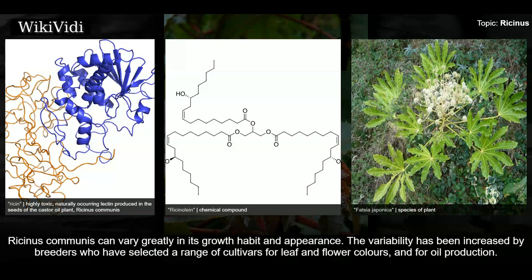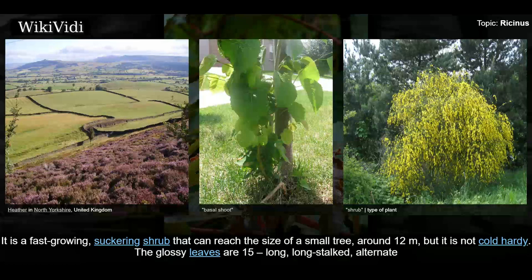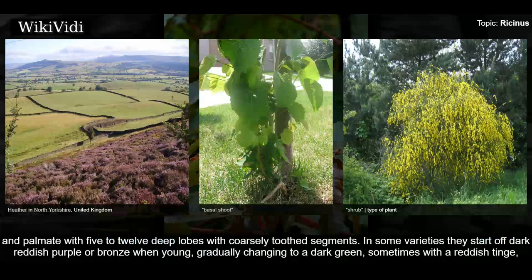Ricinus communis can vary greatly in its growth habit and appearance. The variability has been increased by breeders who have selected a range of cultivars for leaf and flower colors and for oil production. It is a fast-growing suckering shrub that can reach the size of a small tree, around 12 meters, but it is not cold hardy. The glossy leaves are long-stalked, alternate and palmate with 5 to 12 deep lobes with coarsely toothed segments.